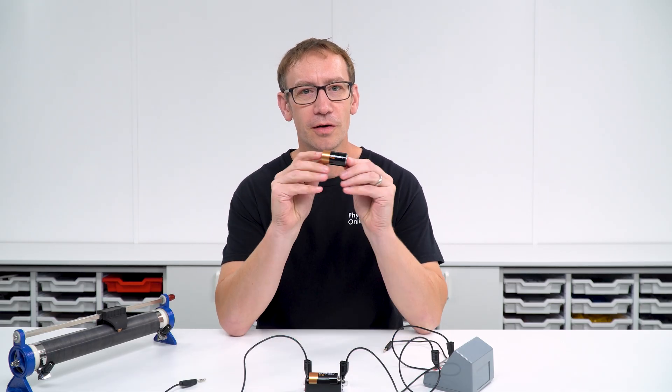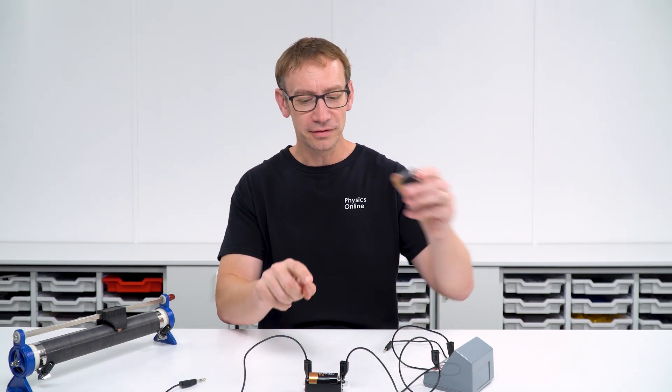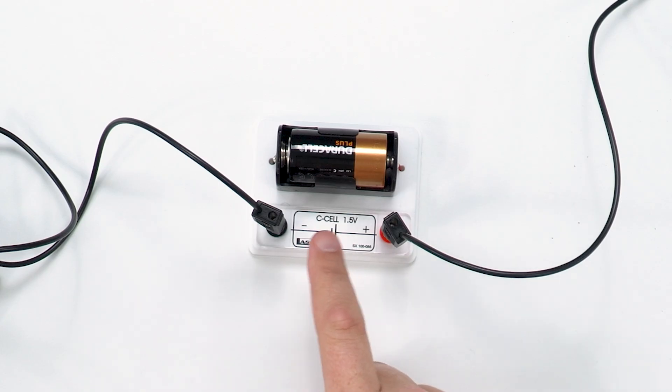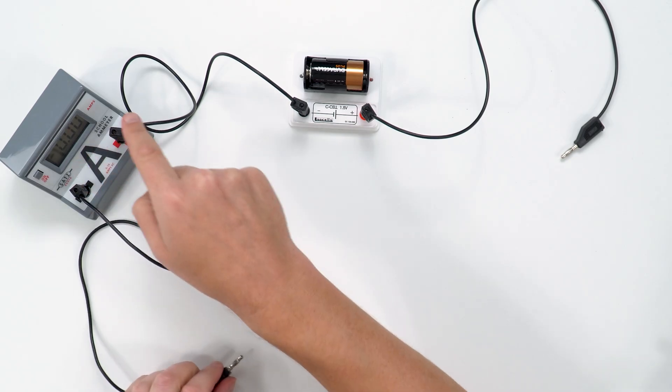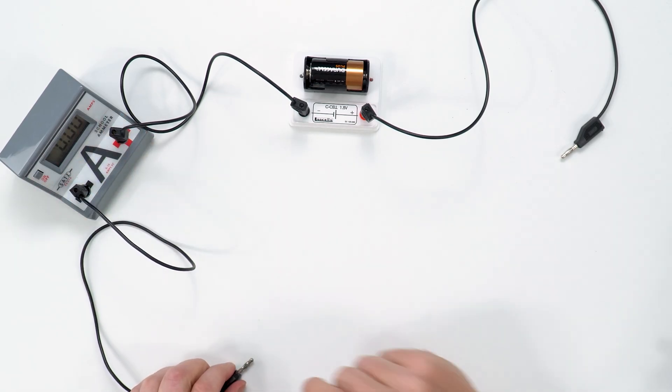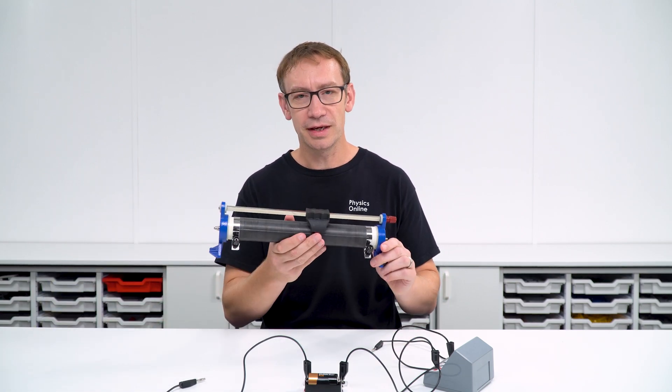We can set up a simple circuit in order to investigate the behavior of a simple cell. Now this cell is in a component holder so we can attach some wires to it. I've got one of these going to an ammeter which we can use to record the current, and then we've also got this thing here.